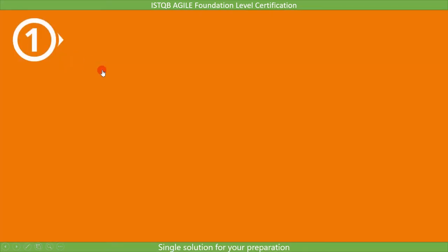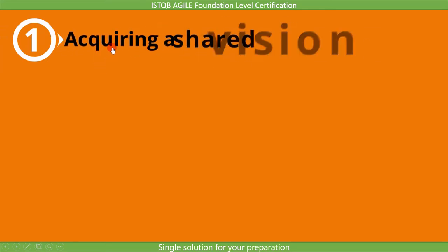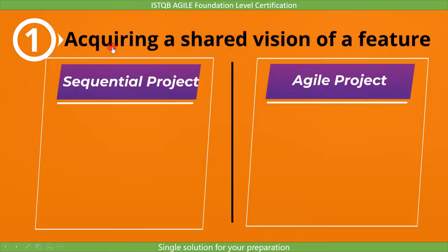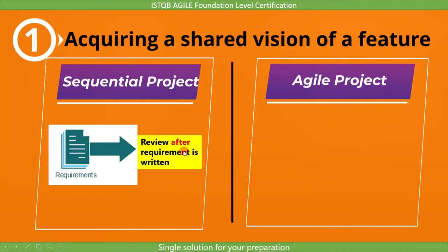Here we will see how acquiring a shared vision of a feature happens in sequential development and in agile development. In sequential development, this shared vision of a feature is accomplished through formal reviews after requirements are written.